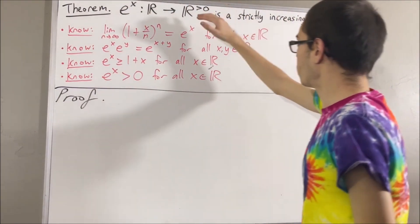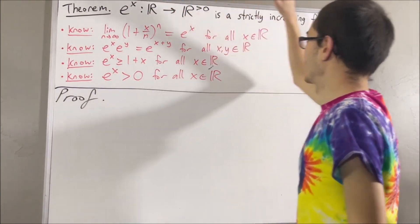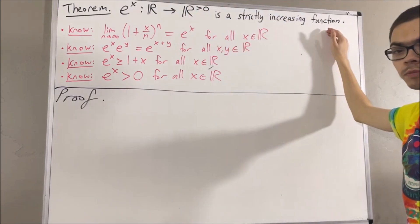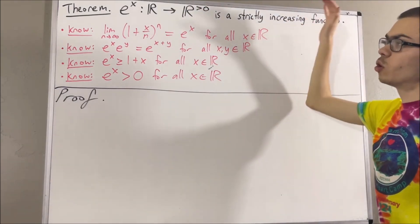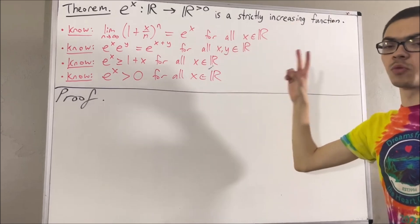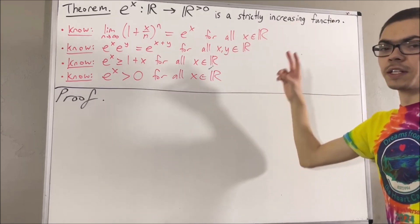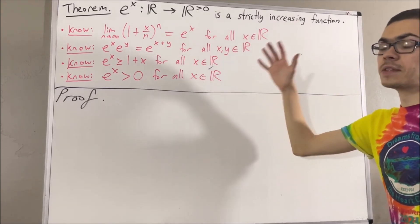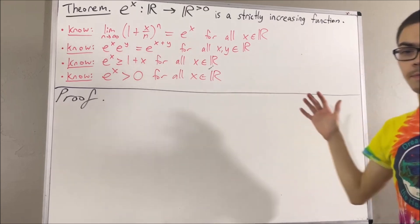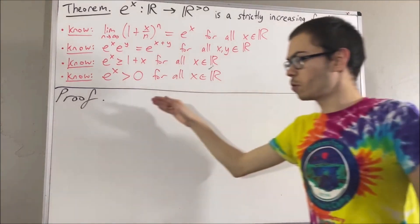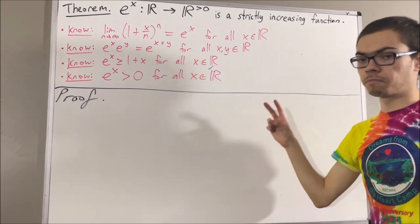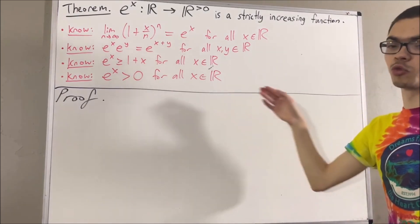We're trying to prove that this function is a strictly increasing function. What that means is, we want to prove that for every two real numbers x and y, if x is greater than y, then e to the x is greater than e to the y. To start the proof, let's give ourselves two arbitrary real numbers x and y such that x is greater than y.